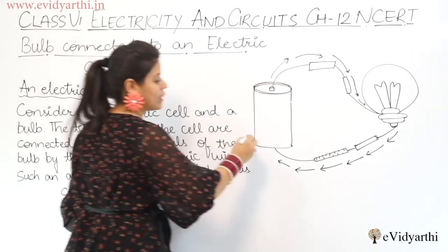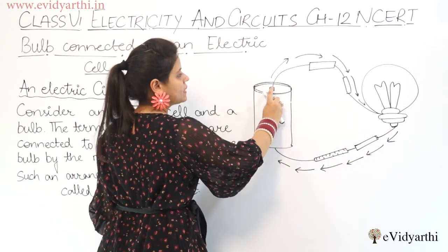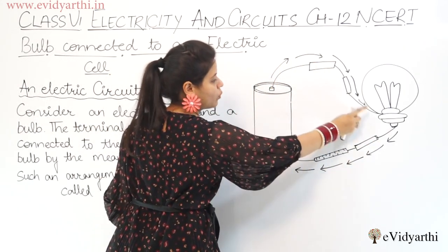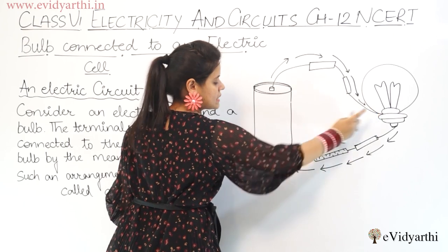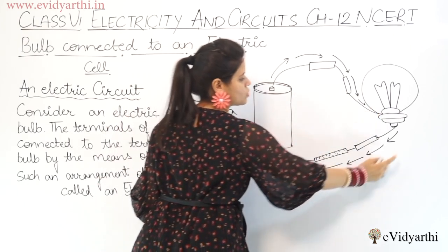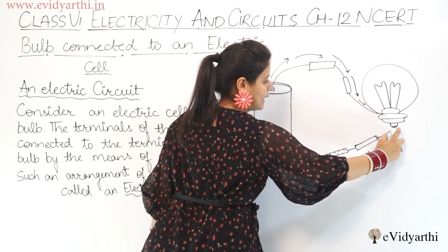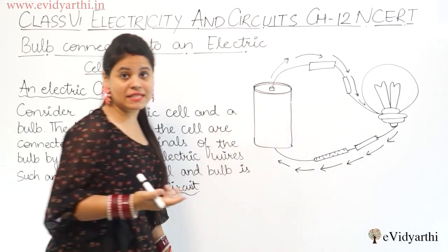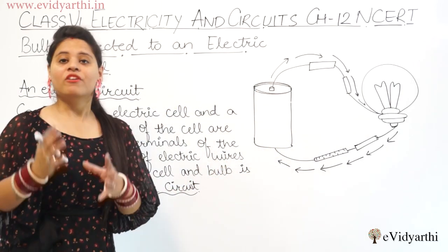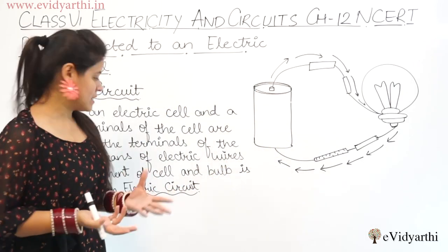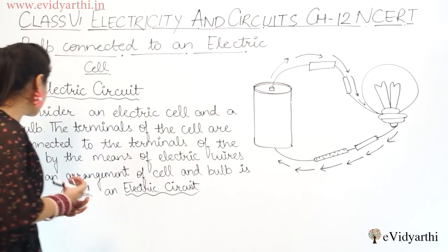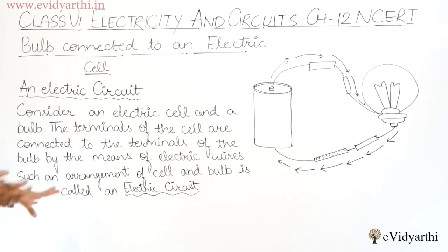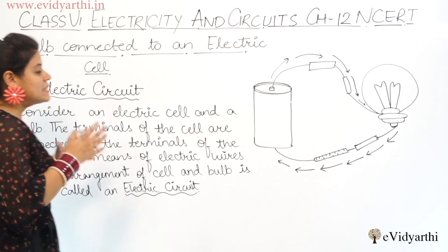Who do we join? You can see here, this terminal is joined to this terminal, and we have joined by this terminal. We have electric wires. Such an arrangement of a cell and a bulb is called an electric circuit.